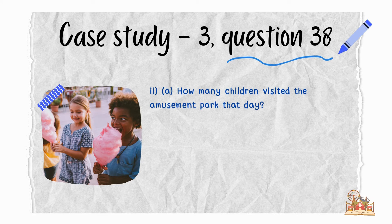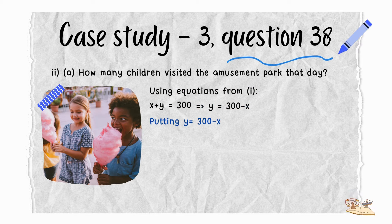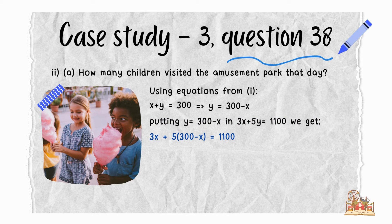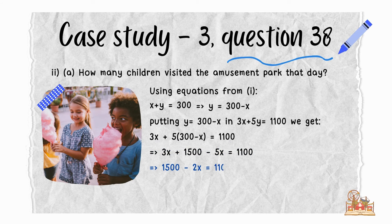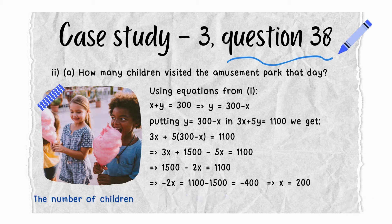How many children visited the amusement park that day? Using the equation x + y = 300, we get y = 300 − x. Substituting into 3x + 5y = 1100: 3x + 5(300 − x) = 1100. Solving this, we get x = 200. So the number of children that visited the amusement park that day was 200.